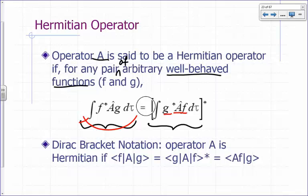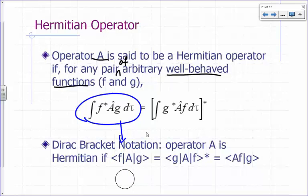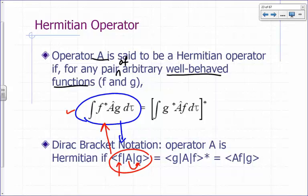The Dirac bracket notation is a simple abbreviation. You write it as ⟨f|Â|g⟩, which means: operate A on function g, multiply that by the complex conjugate of f, and then integrate over all space. This is just a shortcut — these two expressions mean the same thing.